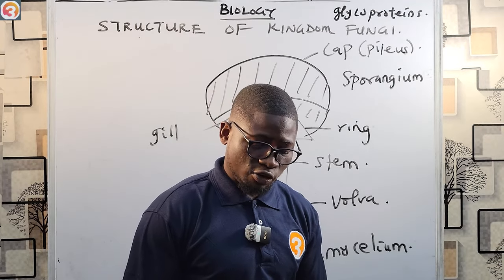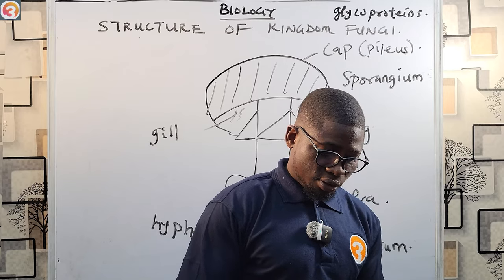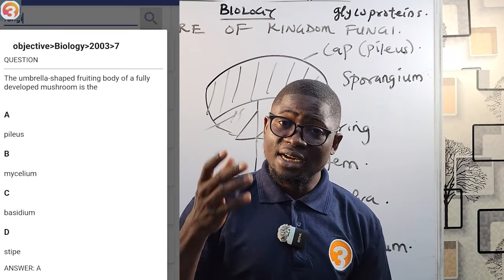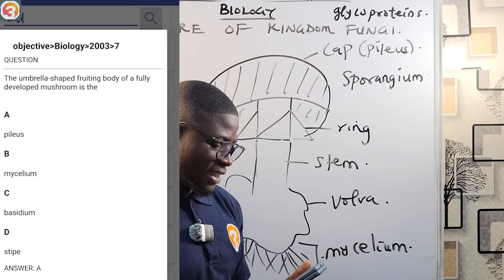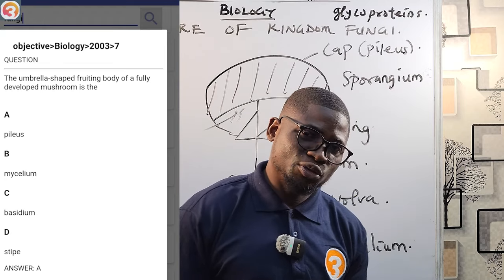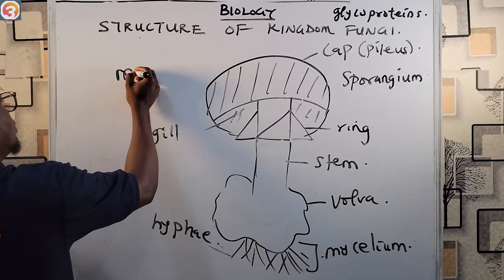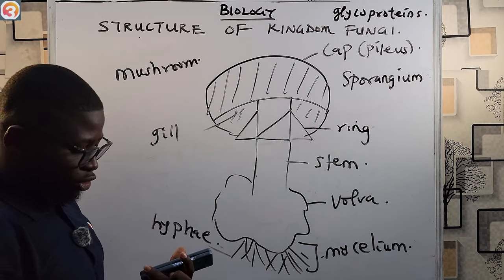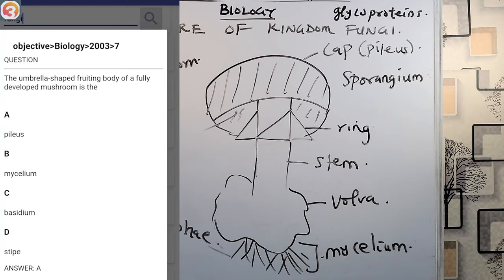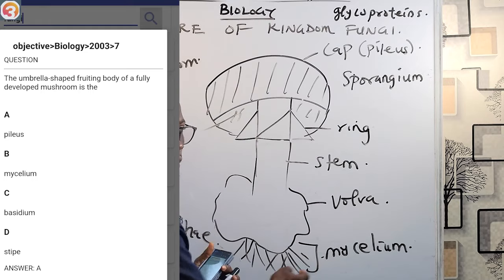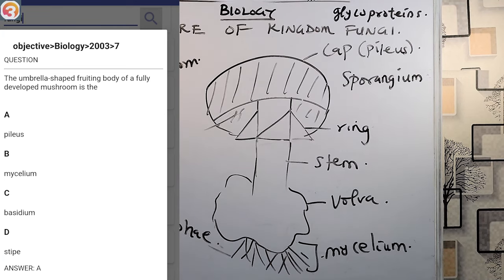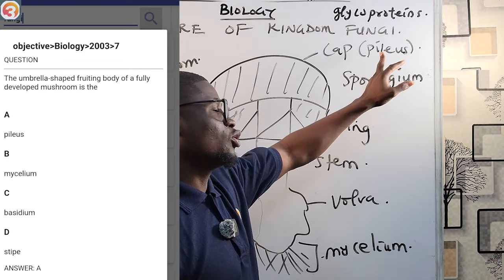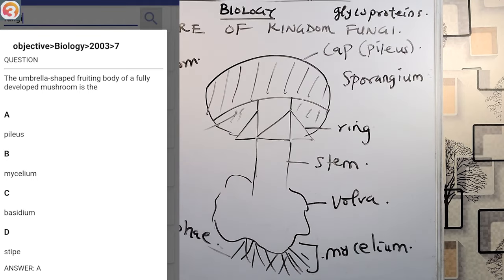Now let's take some past questions from the O3 Schools Jump Up app. A 2003 question asks: 'The umbrella-shaped fruiting body of a fully developed mushroom is called — A. pylos, B. mycelium, C. basidium.' The answer is A, pylos. The pylos is also called the cap, and it is the reproductive part of the mushroom.